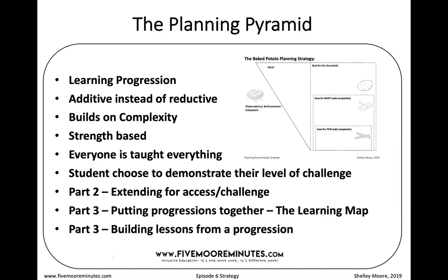Follow-up videos to this: the next one is how to take this grade-level goal continuum and pull it further to create access and challenge points for students who may need support as an entry to the grade band, gifted students, or students with a cognitive disability. Then we'll do a video on how to put all of these goal progressions together — that's called the learning map. And part four is: now that we have these progressions, what's a strategy to actually build lessons from them? Without realizing it, this has turned into a four-part series. I'll post when the next webinar is so you can register.